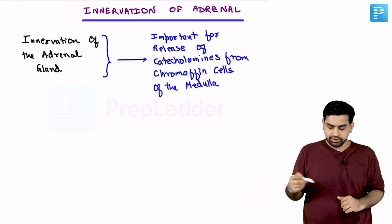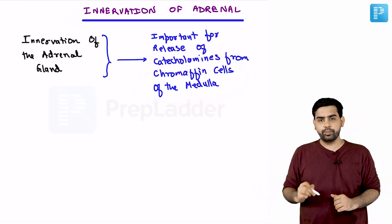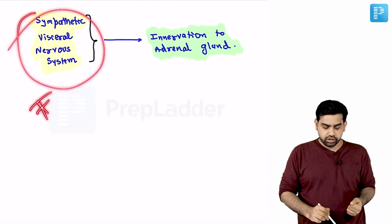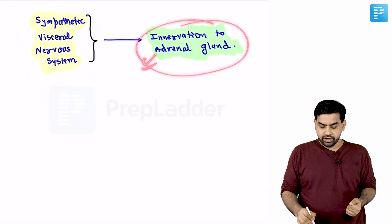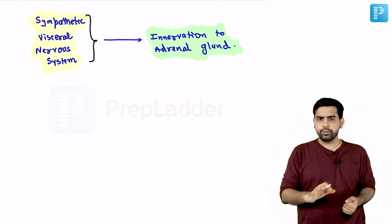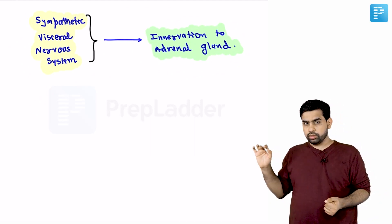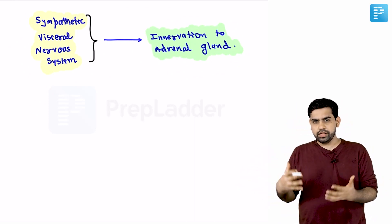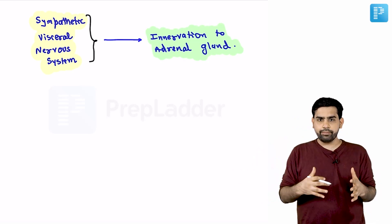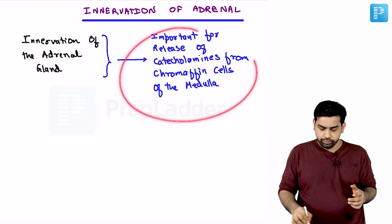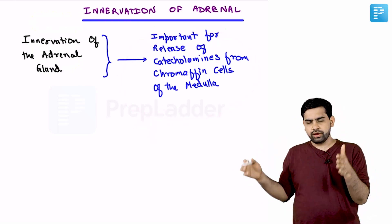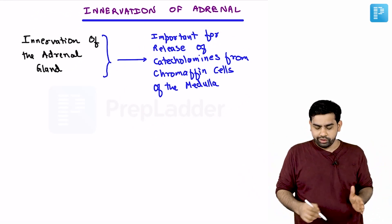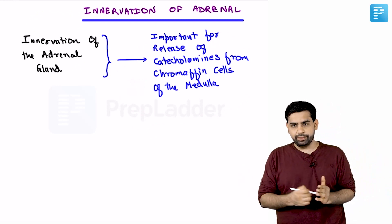The innervation of the adrenal gland is important for the release of catecholamines from the chromaffin cells of the medulla. The sympathetic visceral nervous system is the main innervation of the adrenal gland. The medulla acts like a ganglion — pre-synaptic neurons come and synapse at the adrenal medulla. Sympathetic stimulation is required for catecholamines to be released from the adrenal medulla.